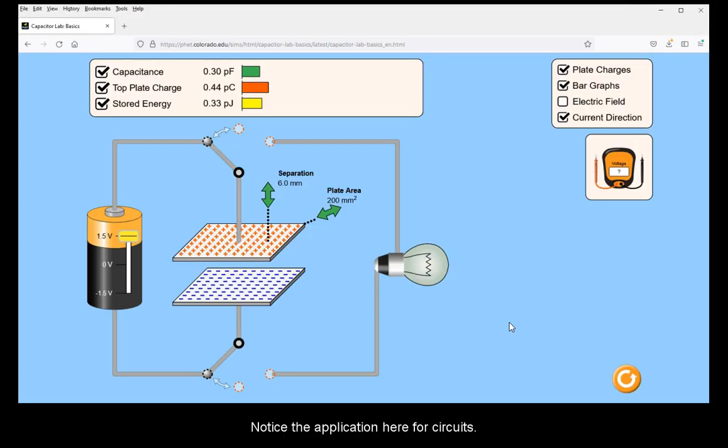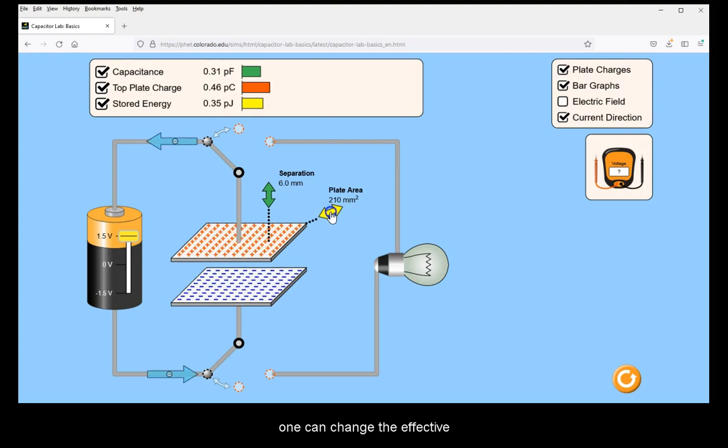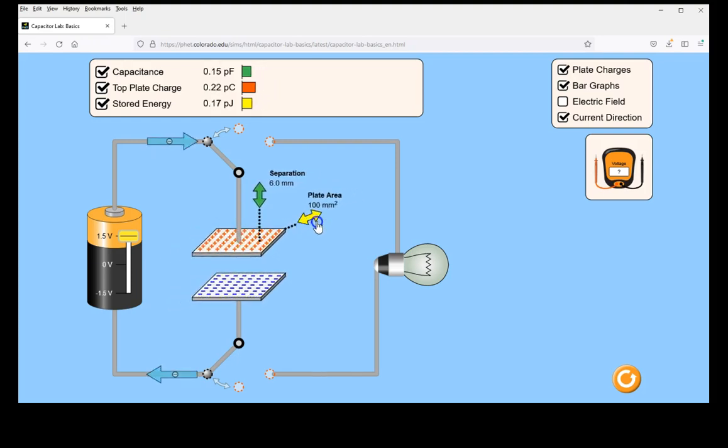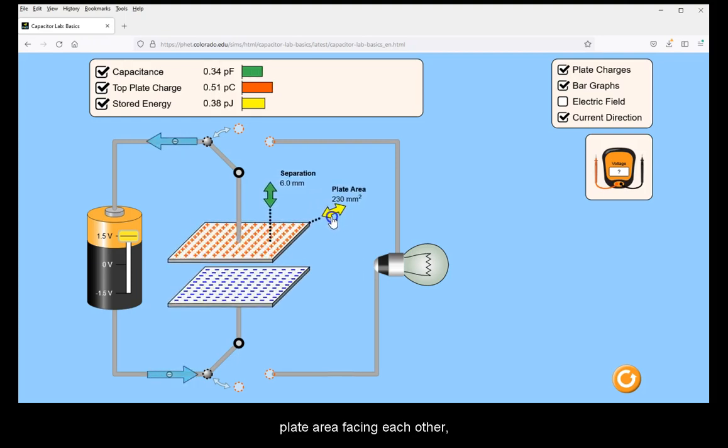Notice the application here for circuits. By sliding two parallel plates past each other, one can change the effective plate area facing each other.